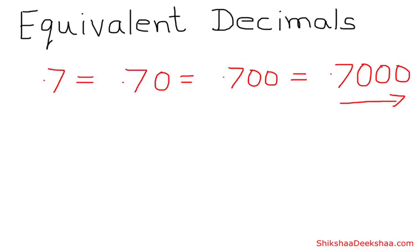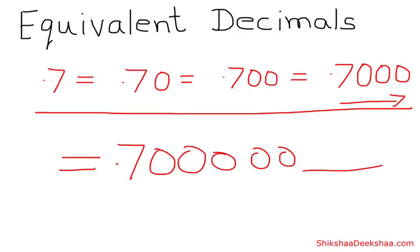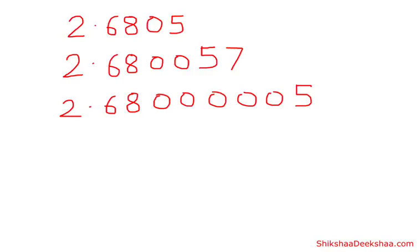Their value will still remain the same. So 0.7, 0.70, 0.700, 0.7000, and so on are all equal, because the last zero in a decimal fraction has no value. If there is only zero as the last digit, then those zeros have no value. These are known as equivalent decimals.